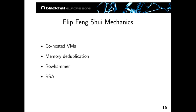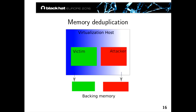How does it work? We're assuming two VMs on the same machine with memory deduplication turned on so we can share physical memory, and that Rowhammer works. We'll tell you about how memory deduplication works, how Rowhammer works, and the basics of the RSA cryptosystem — which is relevant to the example attacks, specifically SSH and GPG.